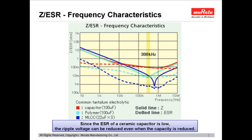Therefore, even though the capacitance is lower, the ripple voltage can be reduced. However, since the ESR is extremely low, abnormal oscillation may occur by just replacing the capacitor. In order to suppress this oscillation, it is necessary to optimize the constant of the phase compensation circuit.